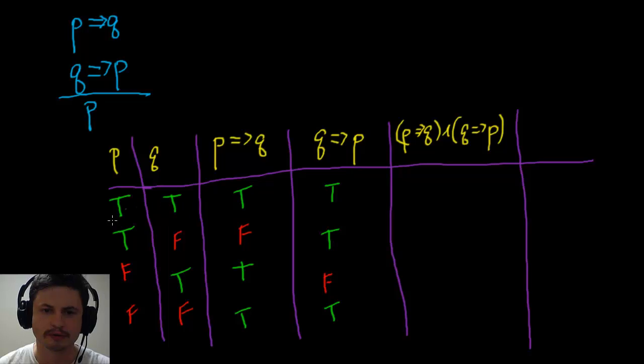Now we're looking at conjunctions, so it's both of them together. And this is only true when both of them are green, which is right here and right here. You can see right away that this is two green rows.